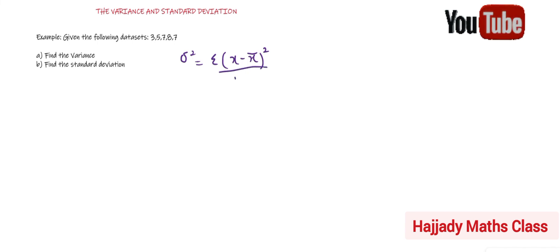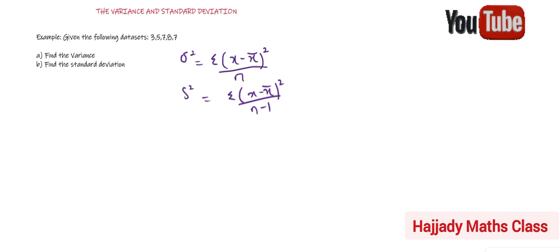The n is the number of observations. Alternatively, for the sample variance, which we are going to work on today, we have s² equal to summation (x minus x̄) all squared, over n minus 1. The only difference between these two is that here n decreases by 1.